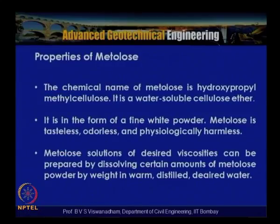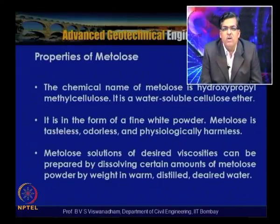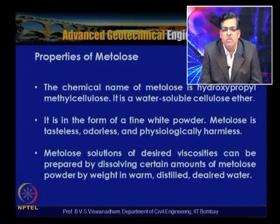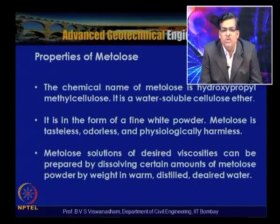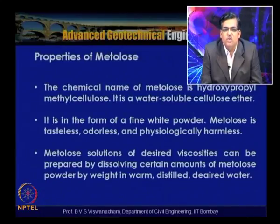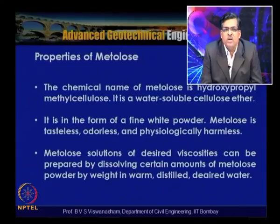The chemical name of Metallose is hydroxypropyl methyl cellulose. It is a water-soluble cellulose ether in the form of fine white powder, tasteless, odorless, and harmless. Metallose solutions of desired viscosities are prepared by dissolving certain amounts of Metallose powder by weight in warm distilled and deaired water. Typically, a high-concentration solution (e.g., 500 centistokes) is prepared and then diluted to the desired viscosity (e.g., 50 centistokes).